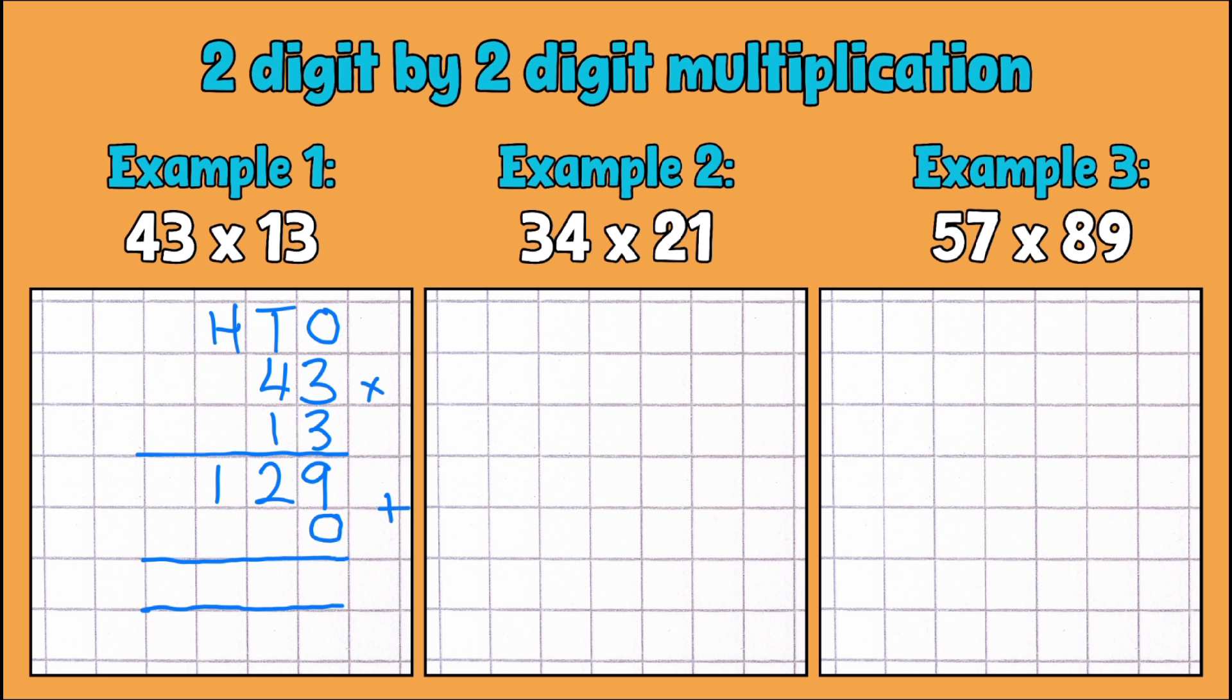So now I'm going to multiply by my tens digit, but I'm going to multiply by 1 actually, because I've already multiplied my answer by 10 by putting my zero there. So I'm going to multiply 1 by 3 and then 1 by 4. So 1 by 3 is 3, and 1 by 4 is 4. So 43 times 10 is 430, so that's worked out perfectly.